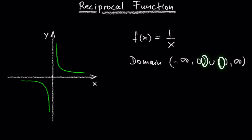The parenthesis indicates that zero is not included in the domain. We use a union symbol here because the domain includes the numbers from zero to negative infinity and from zero to infinity.